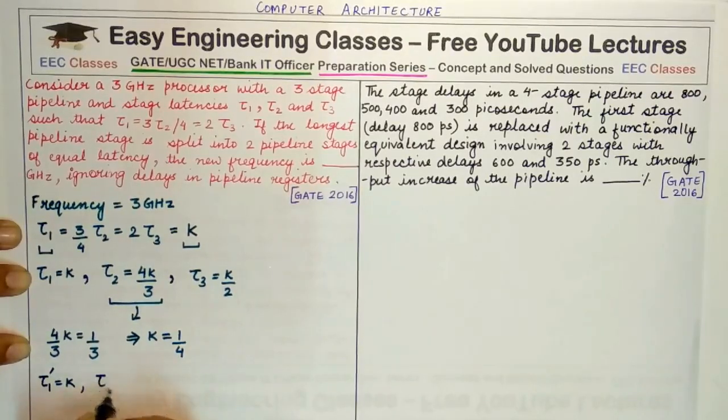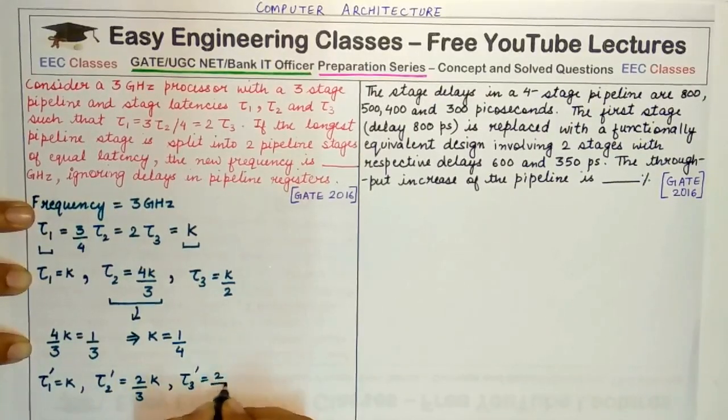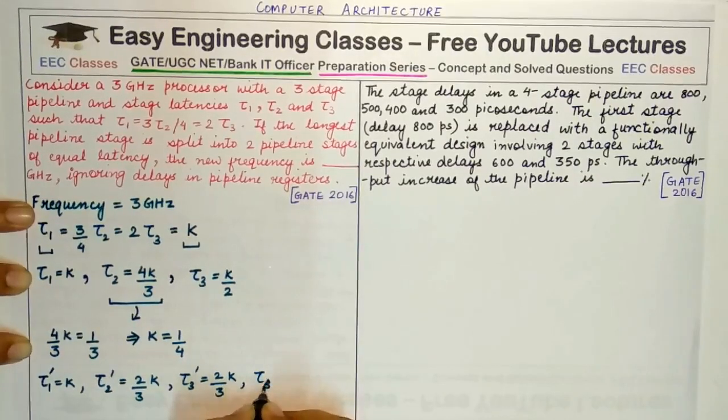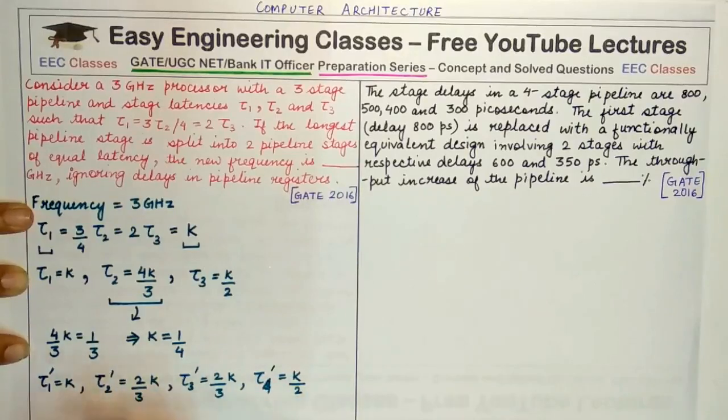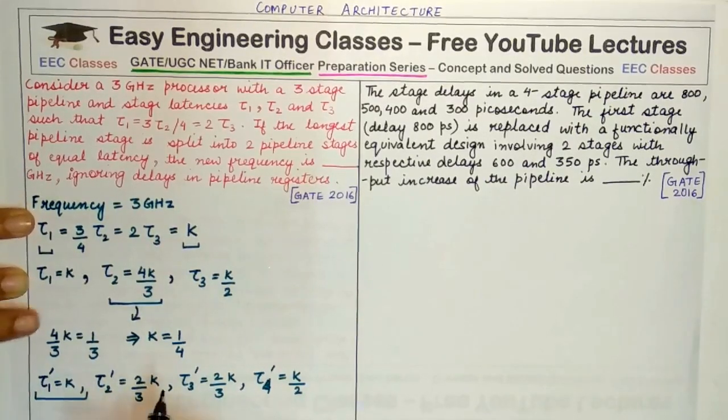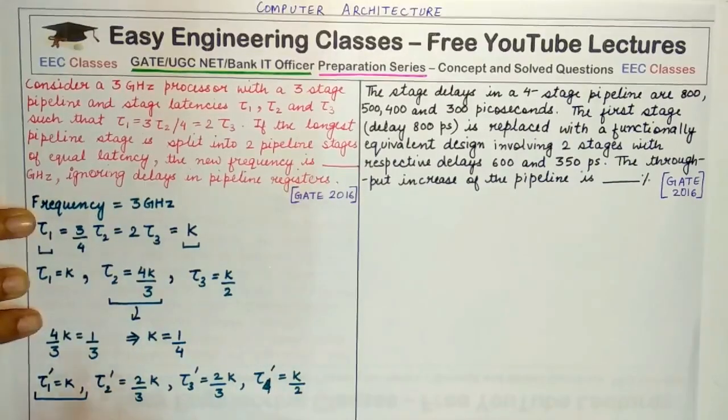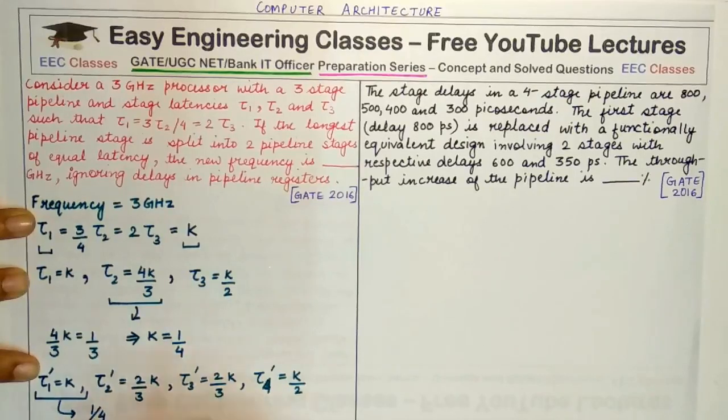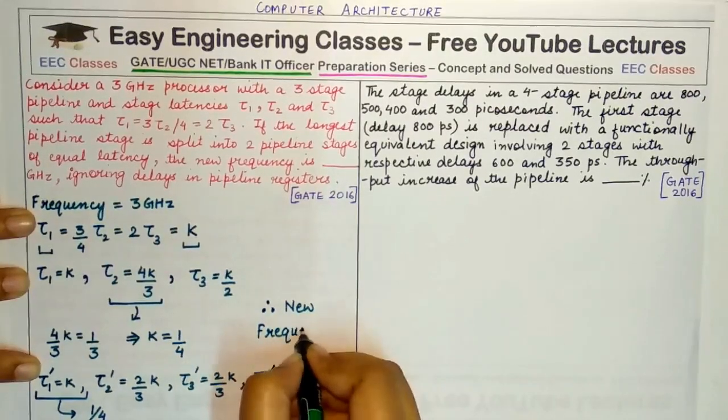I'll write it as τ1' = K, τ2' as 2/3 K, τ3' as 2/3 K, and τ4' as K/2. These are the new pipeline stages, and out of these, the maximum value is τ1' = K. Since K equals 1/4, τ1' = 1/4, and this contributes to the frequency of this new 4-stage pipeline. Since this value is 1/4, the new frequency would be the inverse of this value, which equals 4 gigahertz.